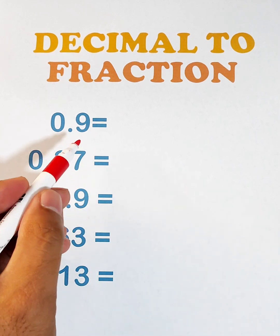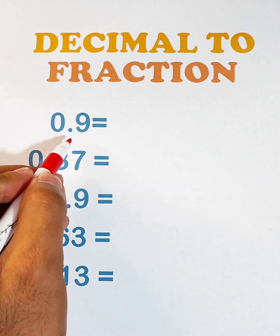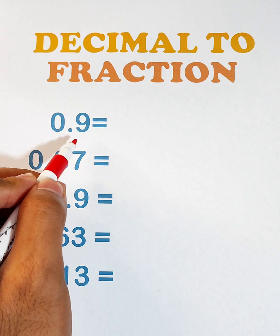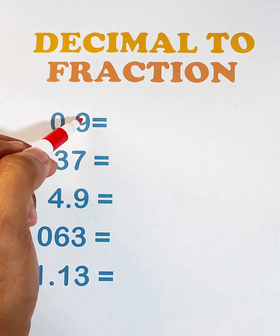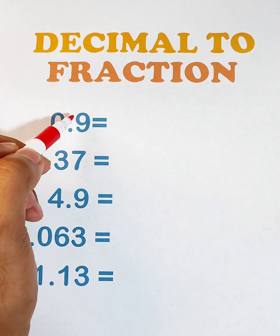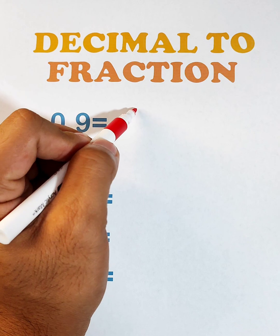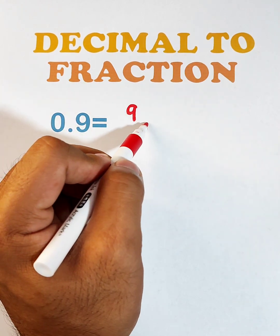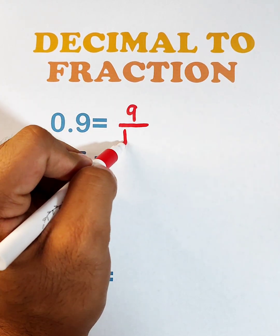So what we have here is the first example. We have 0.9. To get the equivalent fraction of 0.9, first, we need to get this number 9. We will treat this one as a whole number and we will put that in our numerator, 9. And as for your denominator, always put 1 here.